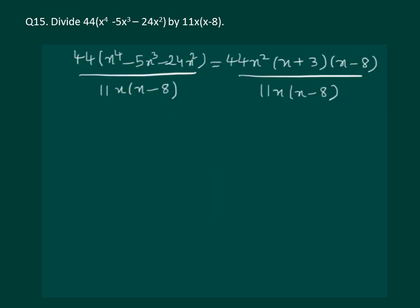So now our question 44(x⁴ - 5x³ - 24x²) ÷ 11x(x - 8) changes to 44x²(x + 3)(x - 8) ÷ 11x(x - 8). Now let us cancel whatever we can cancel. We see that one of the factors gets cancelled. 11 fours are 44 and one of the x can also get cancelled and we are left with 4x(x + 3) which is our required answer.